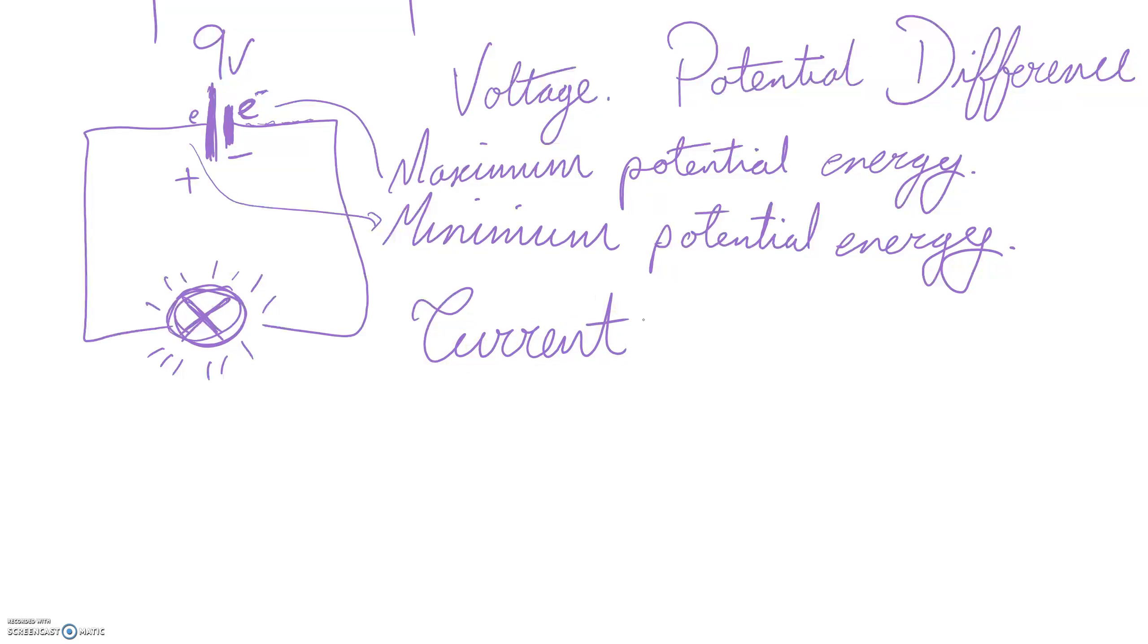Current is the number of charge carriers. In this case, that would be electrons, that go past a given point in a second. So we'd pick a particular point in a circuit and the number of little electrons that go past here in a second, we'd count those. That's the current. That one's a bit easier to understand than voltage.